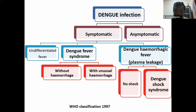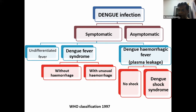Most of them are symptomatic, and the symptomatic ones are classified into undifferentiated fever, dengue fever, and dengue hemorrhagic fever. It is common to see these complicated issues in dengue hemorrhagic fever. However, even in dengue fever, sometimes there can be patients with unusual hemorrhages, which is not very common.